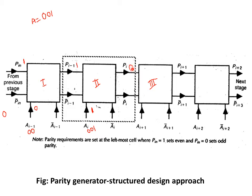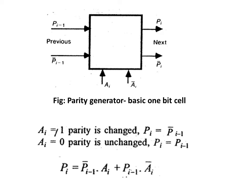Now let us apply the next bit, which is 1. We have already applied the first two bits, so now let us apply the third bit, that is 1. We need to apply this 1 at the input of the second block — that is ai equals 1. This is the lowest level of the block, also called the leaf cell.